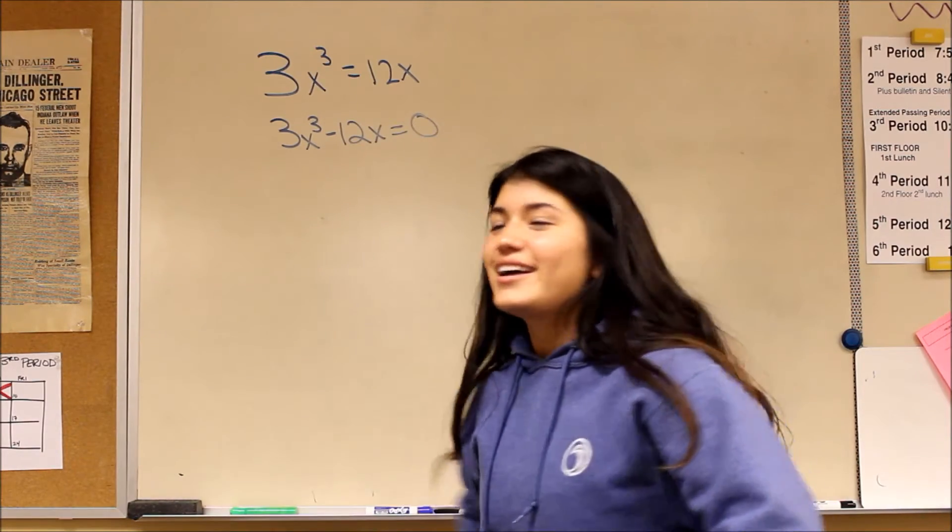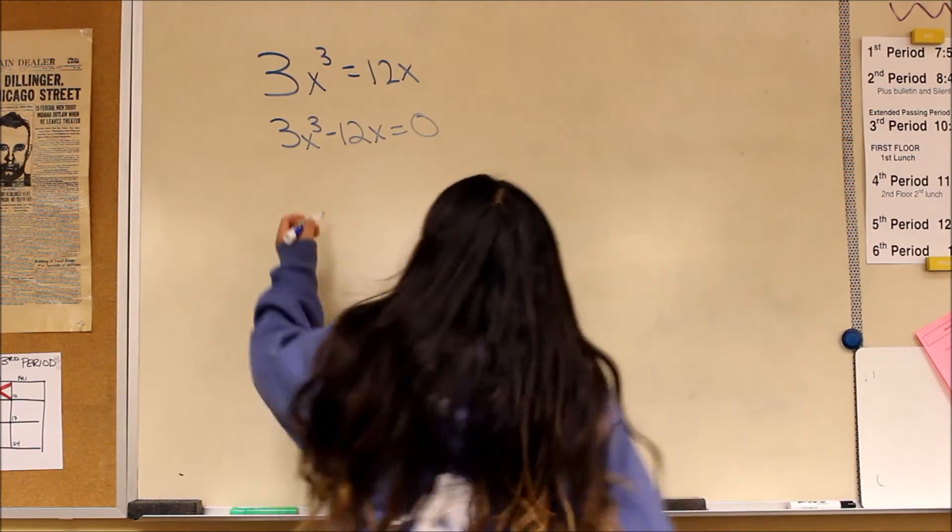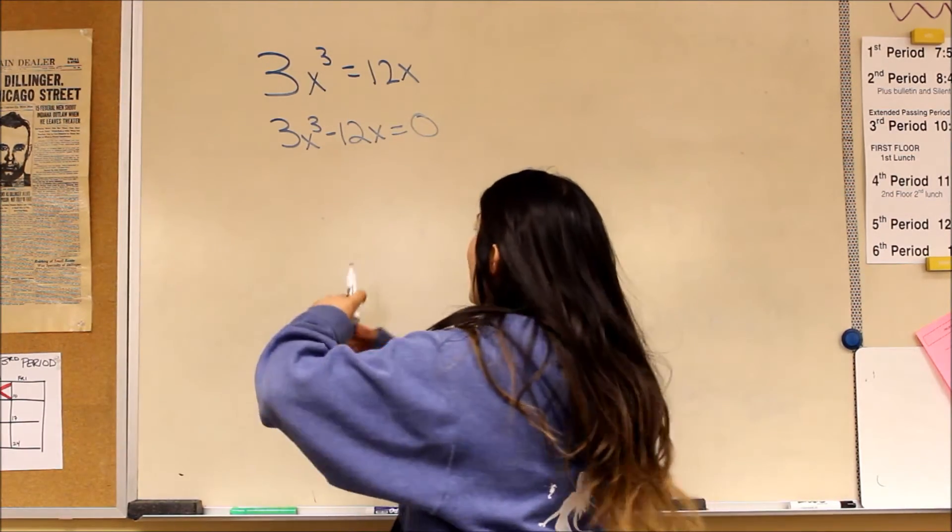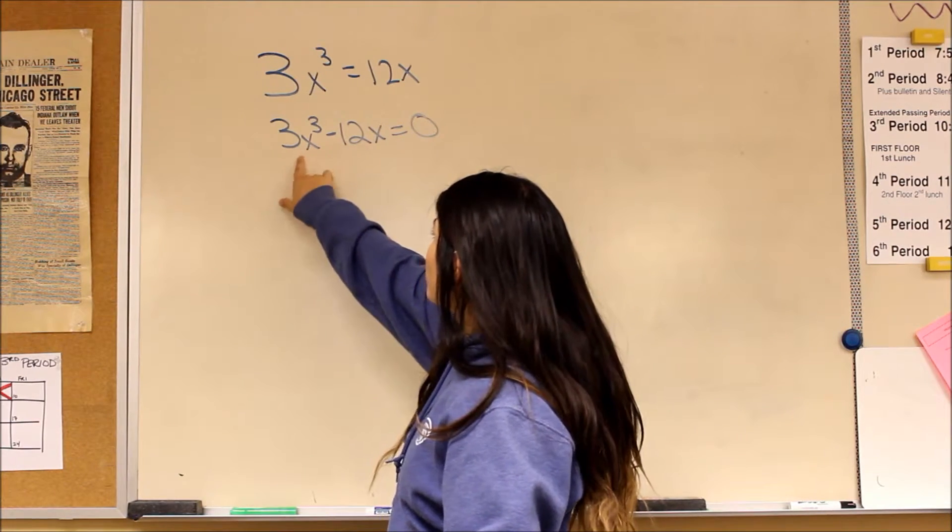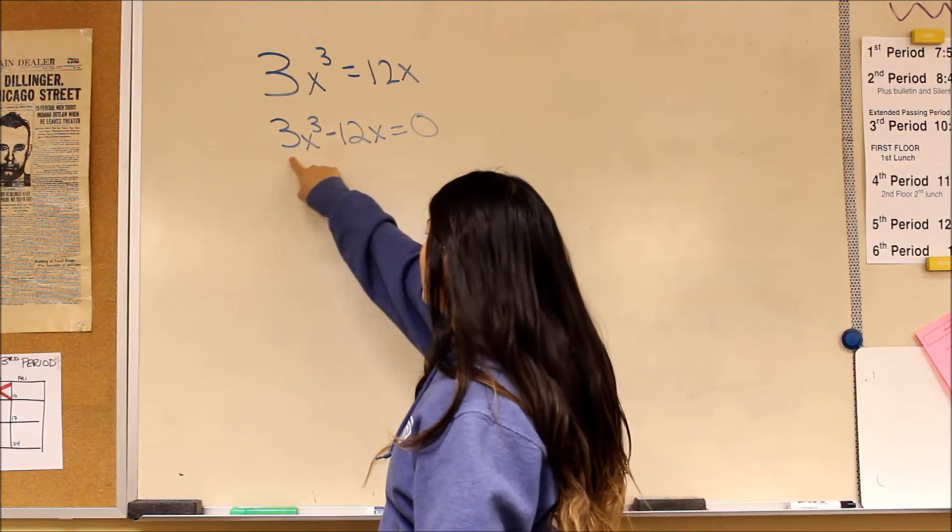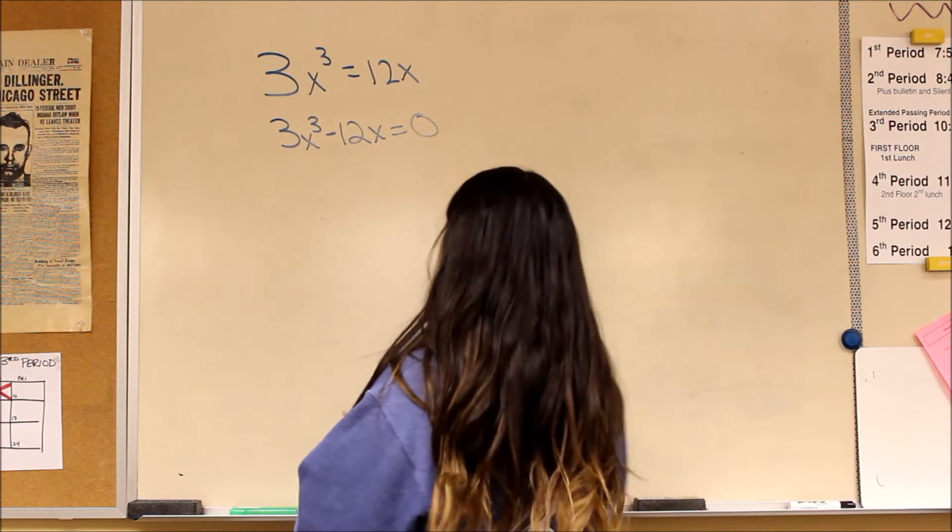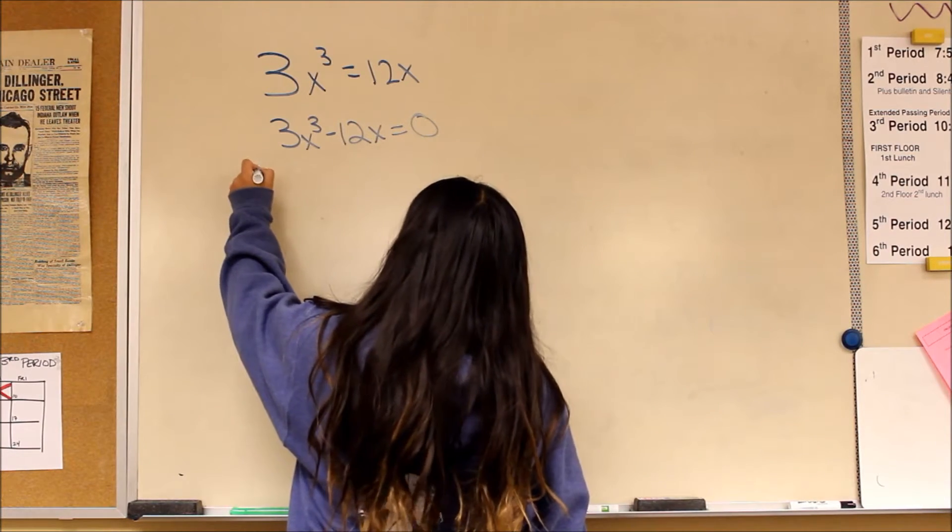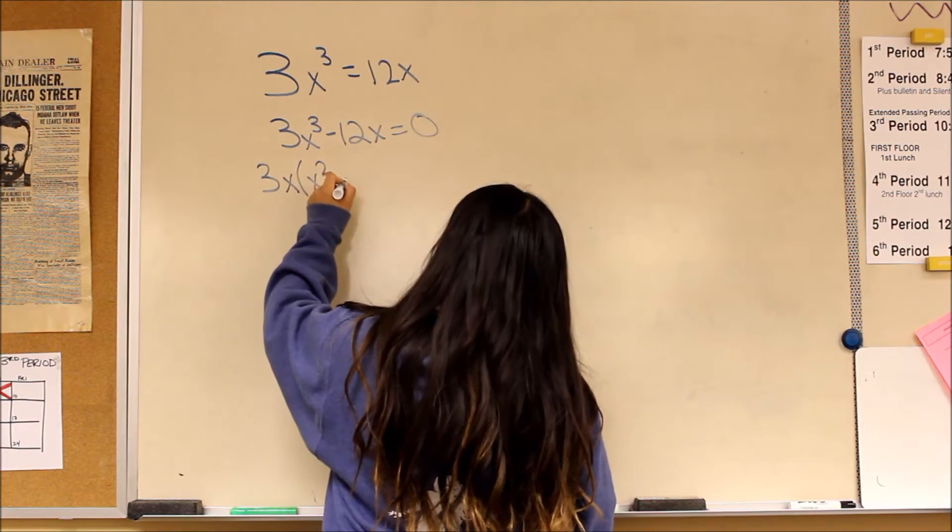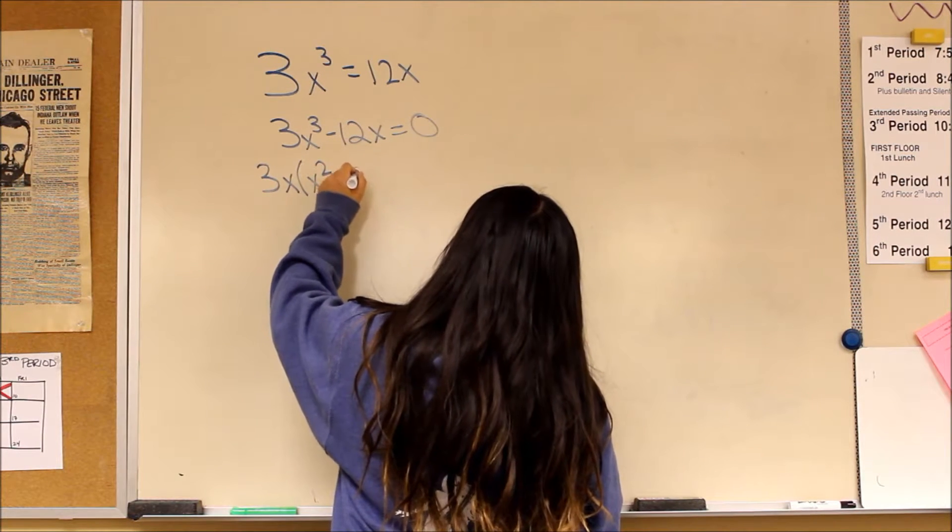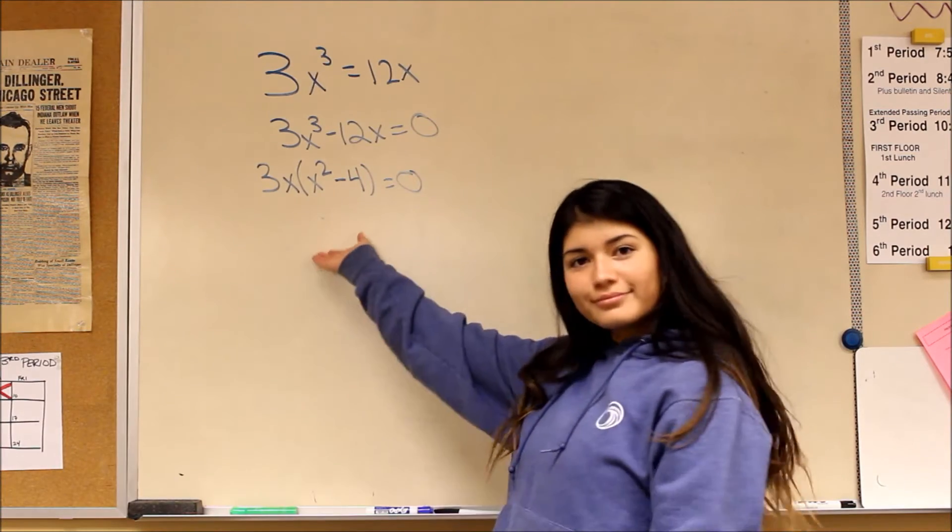Okay, so now what we want to do is factor it. So, what we have in common is 3, because you can pull a 3 out of here and a 3 out of 12. And you can also pull an x out. So, what we're going to do is 3x times x squared minus 4. And then equals zero.